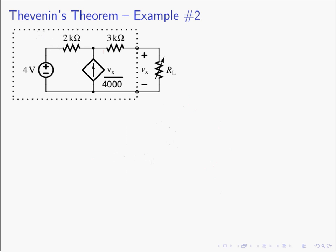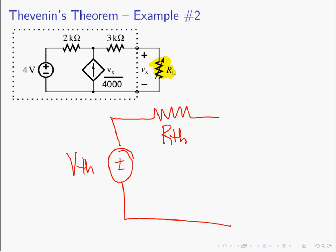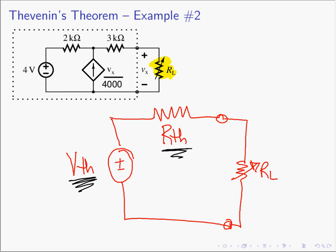Let's try another example. We'll take the circuit and modify it by adding a controlled source instead of an independent source. The question is: given a load resistor R_L, what values of V_Thevenin and R_Thevenin can I use so that R_L gets the exact same behavior? What values do I choose so that R_L can't tell the difference?